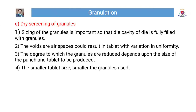Step 5 — Dry screening of granules: Sizing of the granules is important so that the die cavity is fully filled with granules. Voids or air spaces could result in tablets with variation in uniformity. The degree to which the granules are reduced depends upon the size of the punch and tablet to be produced — the smaller the tablet size, the smaller the granules used.